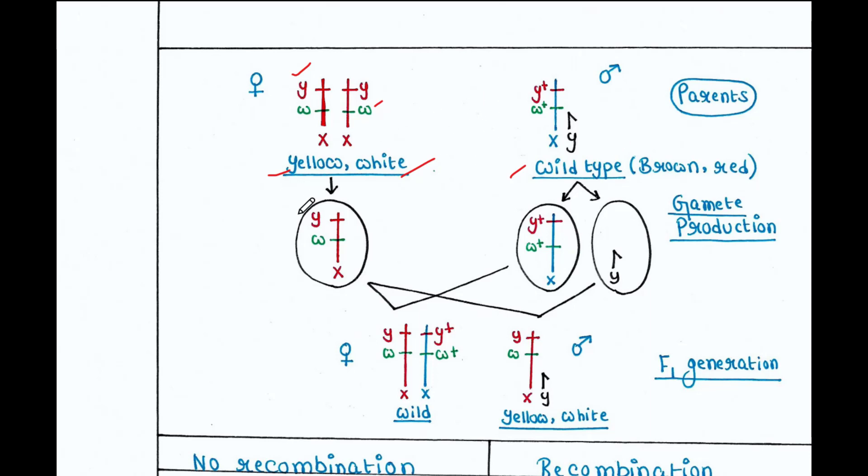These genes are the wild type or dominant counterpart of yellow and white genes. Since males contain one X chromosome and one Y chromosome, they have only one copy of each gene. The Y chromosome doesn't carry any of these genes. He crossed them. Females generate only one type of gamete, whereas males generate two types of gametes.